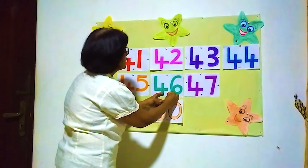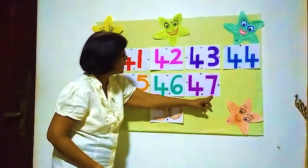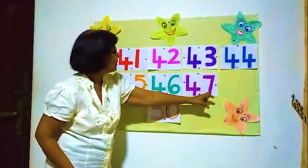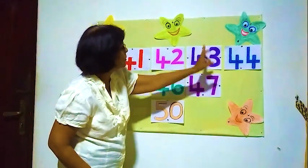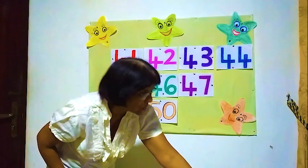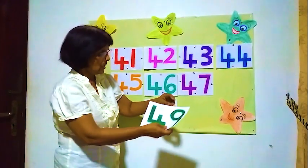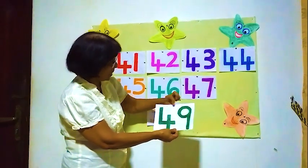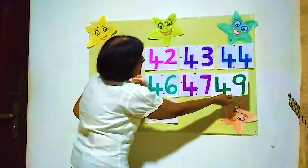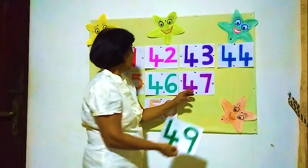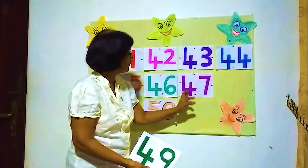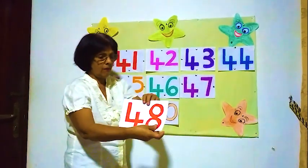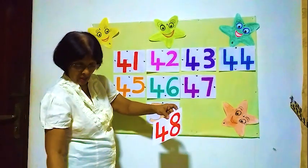After 47, what is the next number? In 47, the 4 stays the same and the 7 is changing. After 7 comes 8, so the next number is 48. That's 4 and 8. Let's check — is this 4 and 8? No, that one is 49, which is wrong. So 4 and 8 must come here — 48.